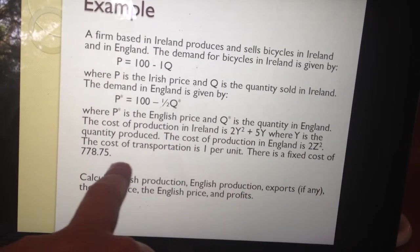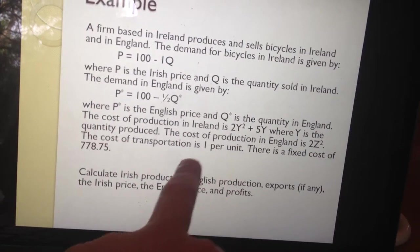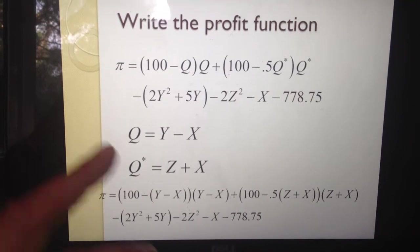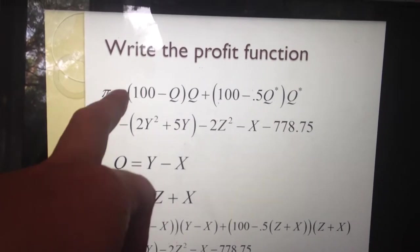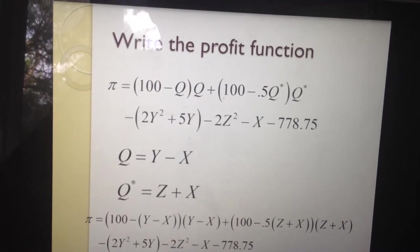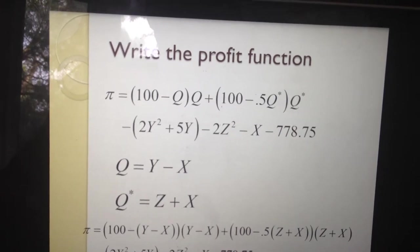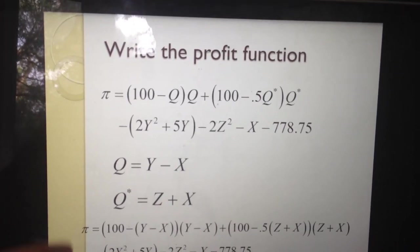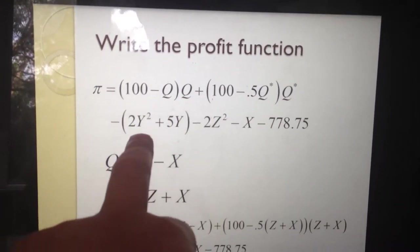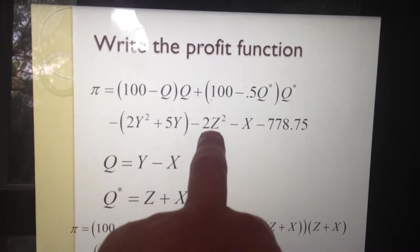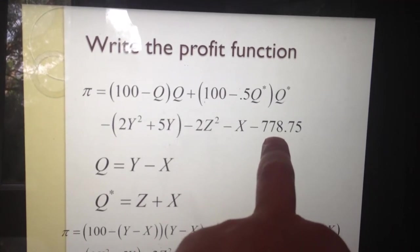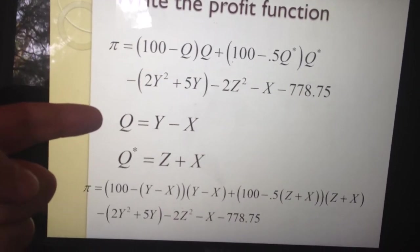The cost of production in Ireland is given, the cost of production in England is given, every unit you ship across borders costs one dollar, and then there's a fixed cost. First, we write out the profit function — that's always the first step. Profit equals price times quantity minus cost. What's different here is we have two quantities and two locations with costs: price in Ireland times amount sold in Ireland, plus price in England times amount sold in England, minus Irish production cost, minus English production cost, minus shipping cost, minus the fixed cost, which is our proprietary asset.